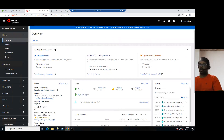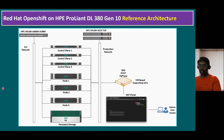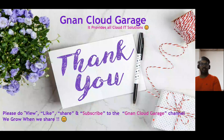OpenShift can run on premises on either bare metal or vSphere, or on private, public, and hybrid cloud environments — even vSphere has hybrid cloud capability. The deployment choice depends on the customer's business requirements. As an OpenShift administrator, we should know how to implement it and understand the pre-requirements, implementation process, and post-implementation steps. If you're watching this video for the first time, please like, share, and subscribe to the Gnan Cloud Garage channel. If you're already subscribed, I appreciate your support. Bye for now.